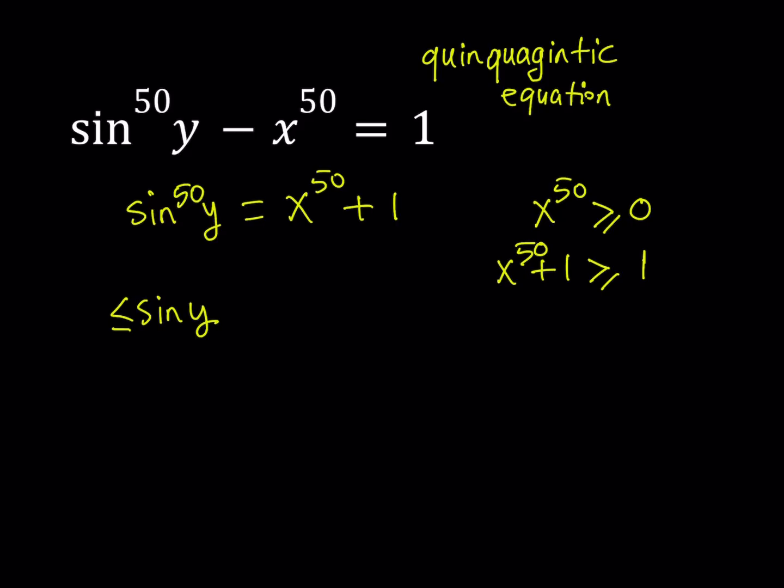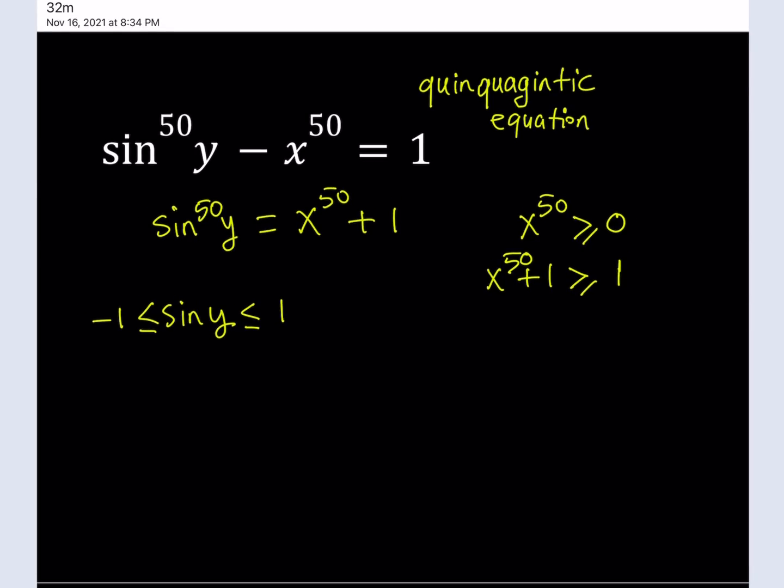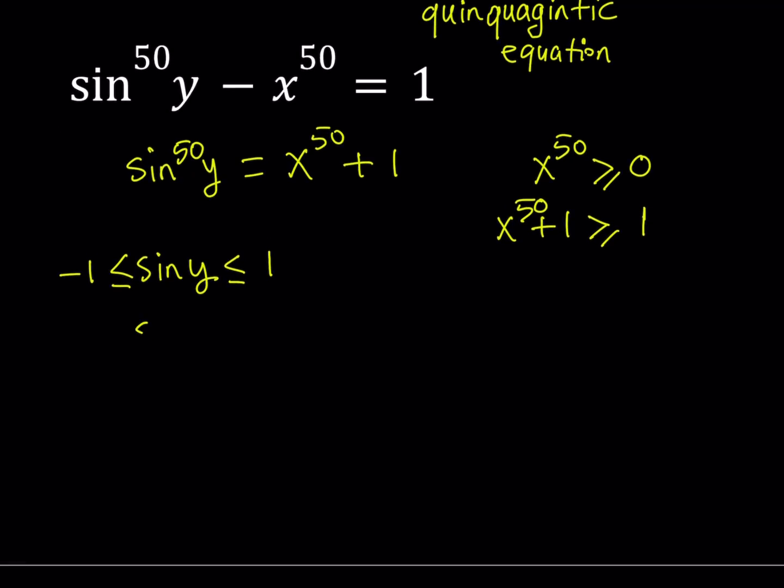So I can safely say that sine y is always, of course, if y is a real number—if not, then things get crazy—obviously sine of y is always going to be between negative 1 and 1 inclusive. But we don't have sine y. We have to raise this to the 50th power. But just like with sine squared, because 50 is even, when you raise this expression to the 50th power, you're going to get something that is not negative, right? So it's going to be greater than or equal to 0. But at the same time, it is going to be less than or equal to 1.